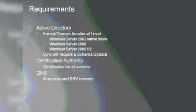To install Lync, you need Active Directory — Lync is based on Active Directory, and all objects including servers and users are created there. You need a forest and domain functional level no older than 2003 native mode, though we support 2003 native mode, 2008, and 2008 R2. Lync will also require a schema update — when you install Lync, additional objects are added to your Active Directory, and you need to do a schema update to make Active Directory aware of these new objects.